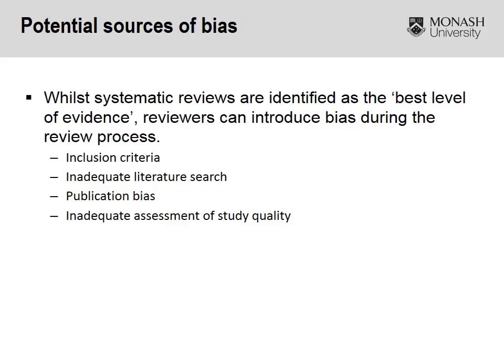So what types of biases can occur in a systematic review? If we're thinking about a systematic review of RCTs or cohort studies, there is still the possibility of introducing bias from a number of areas — whether it be the way in which the search was conducted, whether just one database was used as opposed to a variety, whether or not publication bias was an issue, and the way in which the appraisal of included studies was performed. Was it done using a validated tool, with clear transparent appraisal of each study, and with reasons given for studies that were excluded?